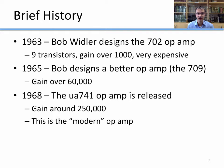In 1965, Bob designed an even better op-amp, called the 709, that had a gain of over 60,000. But then in 1968, the UA 741 op-amp was released. This had a gain of around 250,000, and this is still what we consider the modern op-amp. Released in 1968, it's still in wide production and in wide use in a lot of different products.